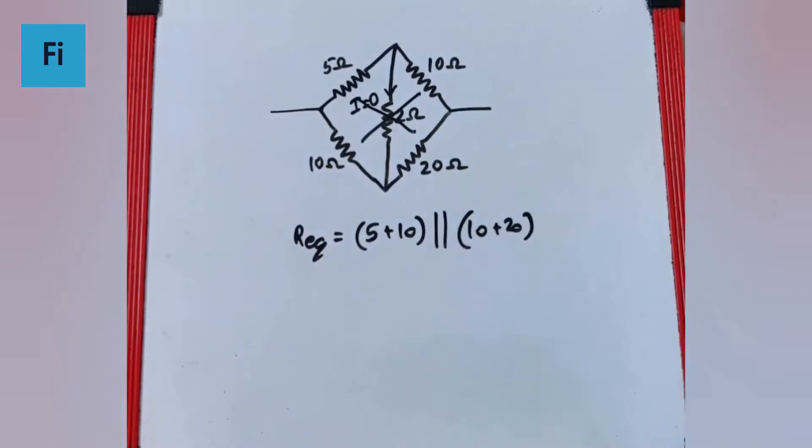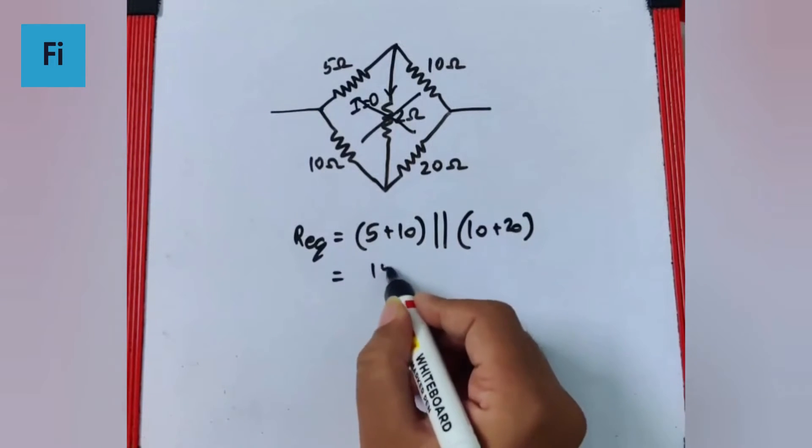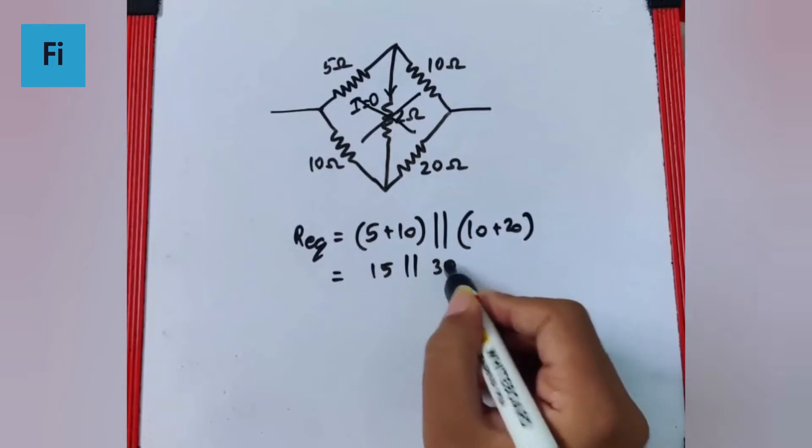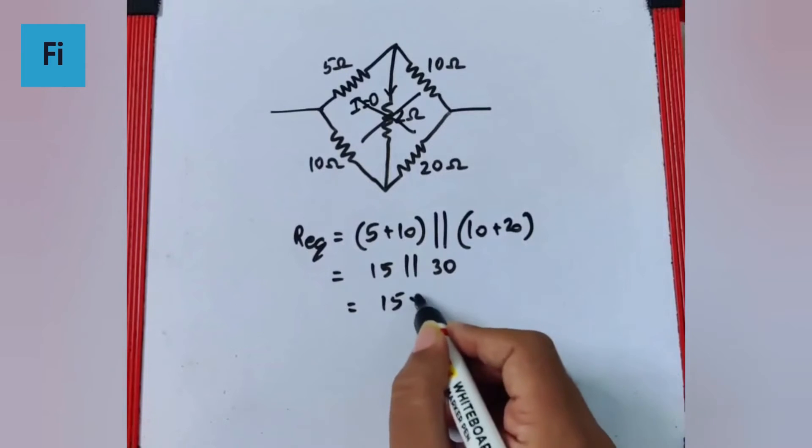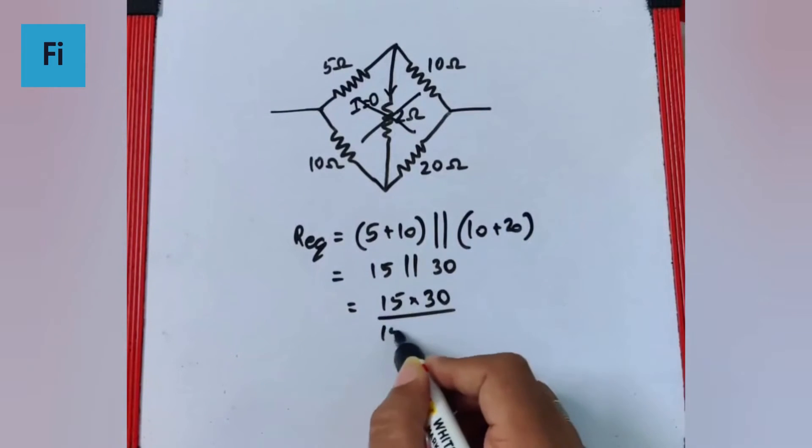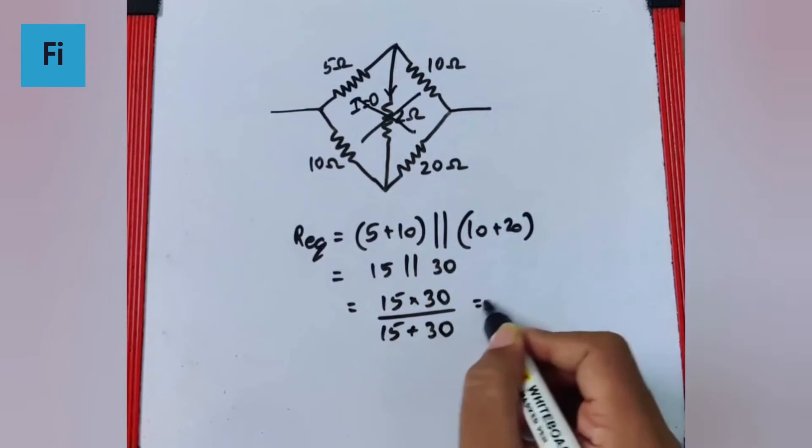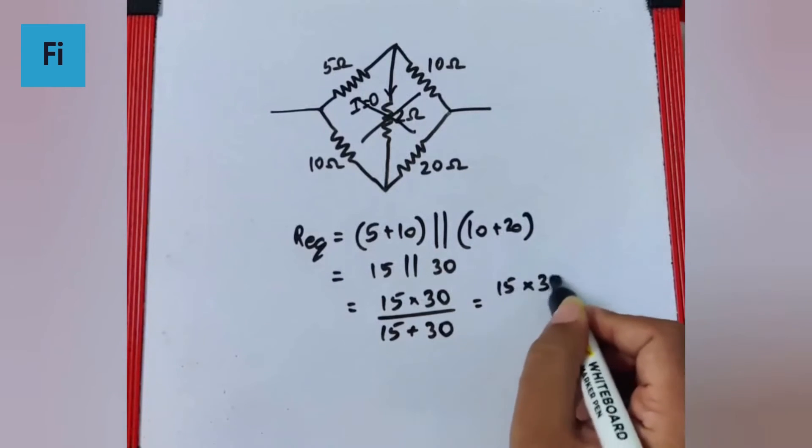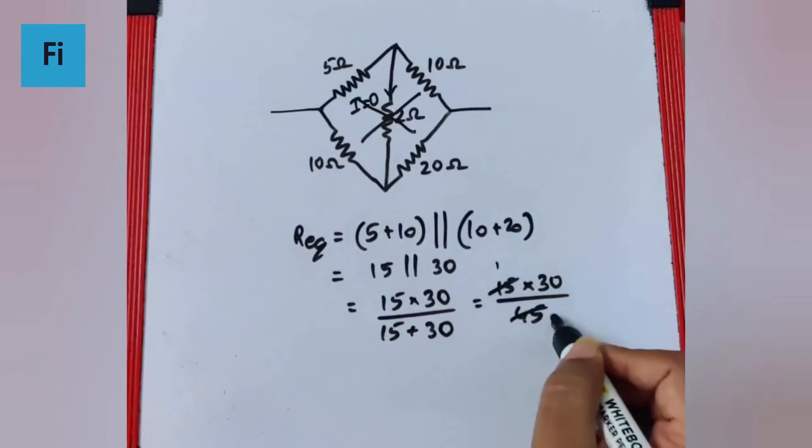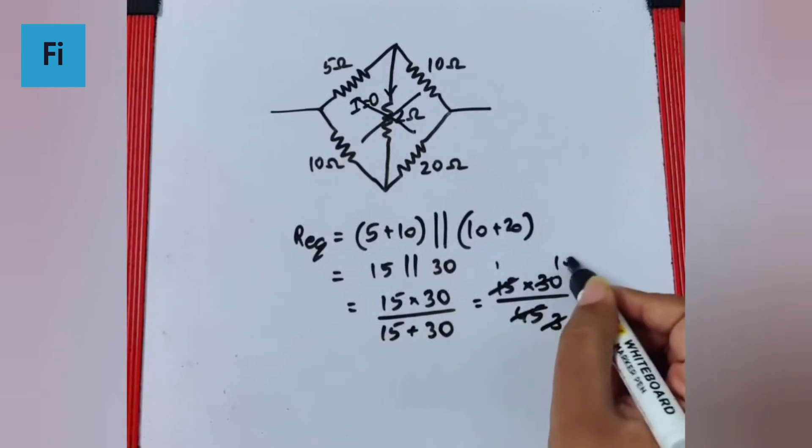So it is as good as 15 parallel with 30, that is like 15 into 30 upon 15 plus 30. That is like 15 into 30 upon 45, so 15 ones are 15, threes are 3, ones are 3, tens.